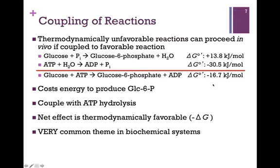So if both of these reactions happen concurrently, then even though it costs us energy to produce glucose 6-phosphate, if we couple that with ATP hydrolysis, the net effect is a reaction that's favorable, a negative delta G. This is a very common theme in biochemical systems. So then we can turn an unfavorable reaction to a favorable reaction in the case that we saw in the previous slide simply by increasing the reactant concentration, or in this case we can couple an unfavorable with a favorable reaction and still make it happen inside the cell.